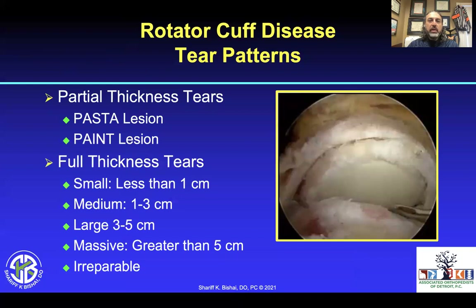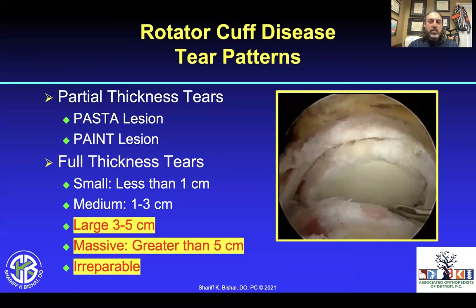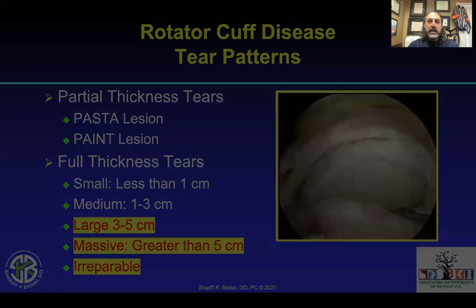When we look at the different tear types, there are partial thickness tears — the PASTA lesions, the PAINT lesions — and the full thickness tear, which is usually classified by size. We're going to discuss the large, massive, and irreparable tears today.